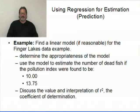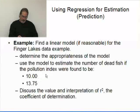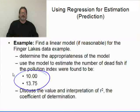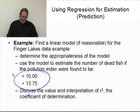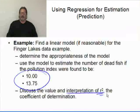I'm going to use the Finger Lakes example again and go back to the original question: to estimate the number of dead fish based on the pollution index of 10 and 13.75. We also still need to take a look at the value and interpretation of R squared.